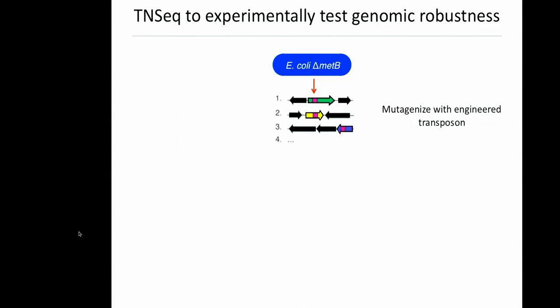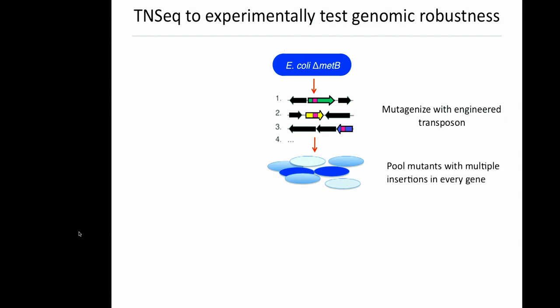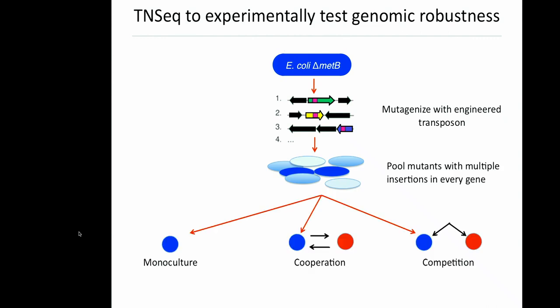We've just gotten funding to continue this and experimentally test these computational predictions. For this, we're using TNSeq to create the library of all possible knockouts — you throw in a transposon which inserts randomly into the genome and create libraries of 50,000 mutants, all with unique insertions. You then take this pool of mutants, grow it in different ecological contexts, look at how the frequency of these mutants changes, and use that to understand the selection on every gene within a community.